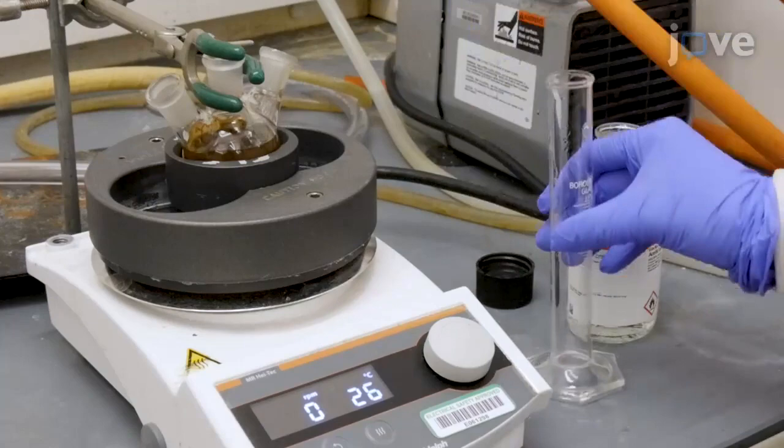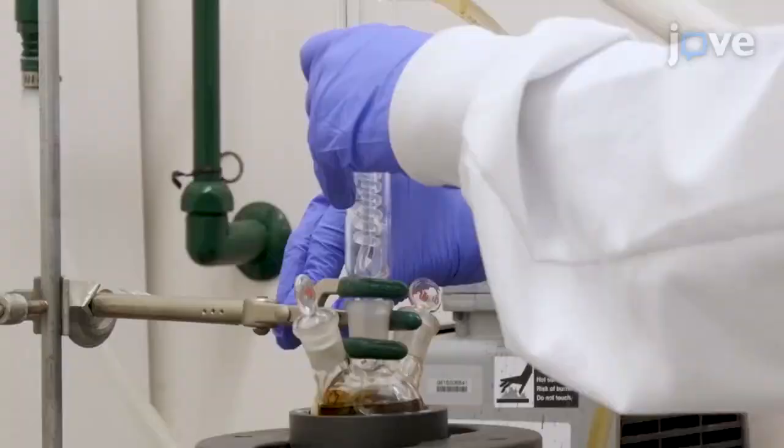Equip the flask with a condenser, stopper the other necks, and fix the flask in a heating insert on a stirring hot plate.